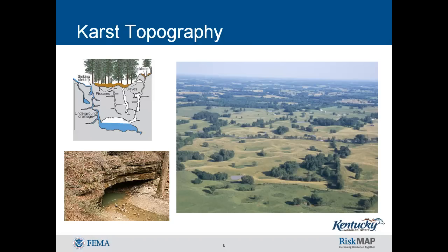Many of Kentucky's cities are built on karst, including Frankfort, Louisville, Lexington, Lawrenceburg, Georgetown, Winchester, Paris, Versailles, and Nicholasville in the bluegrass and surrounding areas. In the western Pennyroyal region, the communities of Fort Knox, Bowling Green, Elizabethtown, Munfordville, Russellville, Hopkinsville, and Princeton are affected. And in the eastern Pennyroyal region, affected communities include Somerset, Monticello, and Mount Vernon.